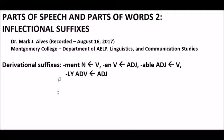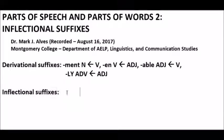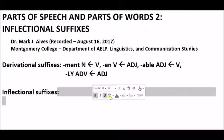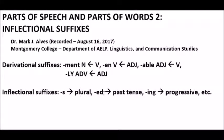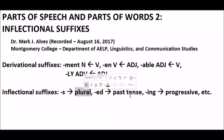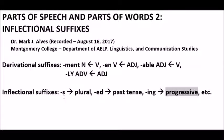There is another category of suffixes called inflectional suffixes. In English, these include these samples here: -s, -ed, -ing. These suffixes do not change the parts of speech of the words. Nouns stay nouns and verbs stay verbs. Instead, they change the words in terms of grammatical features, such as nouns being plural, a verb being past tense, or progressive. There are different types of inflectional suffixes for different parts of speech, and I'm going to discuss a few of the main ones in English.